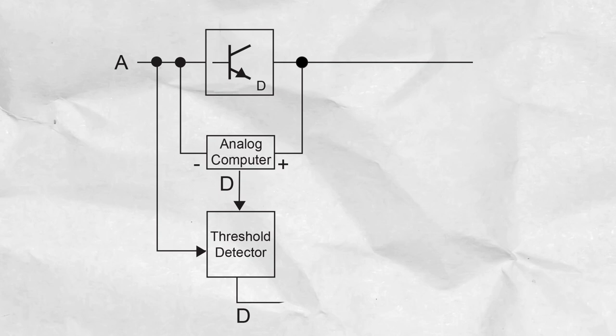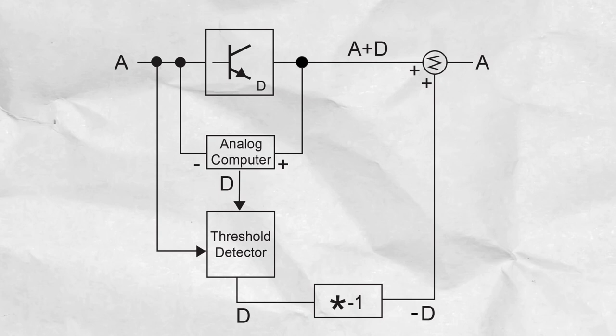If it's audible, we invert the distortion signal and add it to the output of the amplifier block. The result is the distortion of this block will be cancelled without time delay.